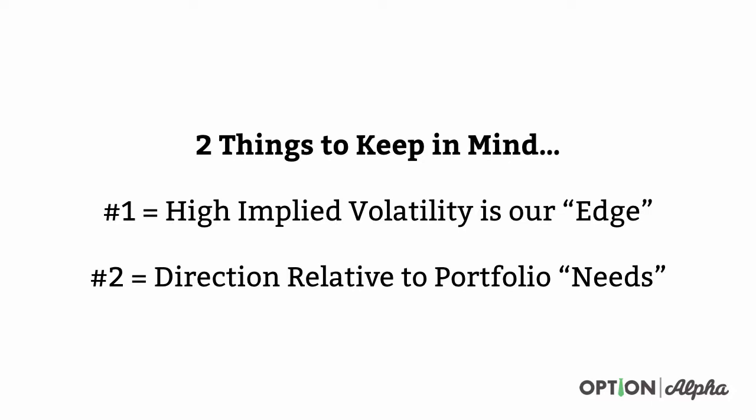Here are two things to keep in mind — and again, this all revolves around low-hanging fruit. Number one: high implied volatility is our edge. If you're going to focus on anything as far as scanning, high implied volatility has to be at the center point of how you quickly find trades. When I go looking for trades every day, the first thing I'm looking for is which stocks or ETFs have high implied volatility that create an opportunity for me to get on another trade.